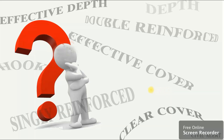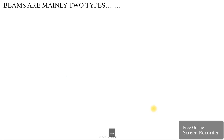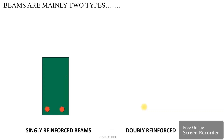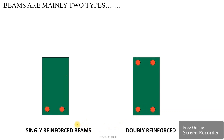In our discussion, we are going to discuss the basic things. We are going to use beams called singly reinforced beams and doubly reinforced beams. Beams are mainly two types: singly reinforced beams and doubly reinforced beams. Singly reinforced beams have main reinforcement at one location, and doubly reinforced beams have main reinforcement at two locations.